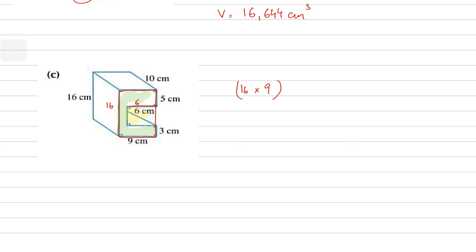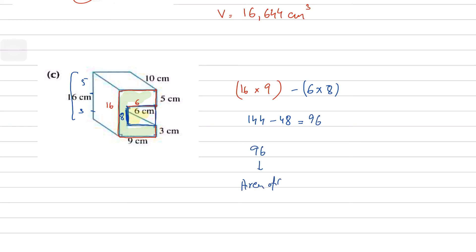The missing rectangle has one dimension of 6. The other dimension is found by noting the total length is 16, with parts of 5 and 3, so 16 minus 8 equals 8. So the inner rectangle is 6 by 8. Area of cross section equals 16 × 9 minus 6 × 8, which is 144 minus 48 equals 96.